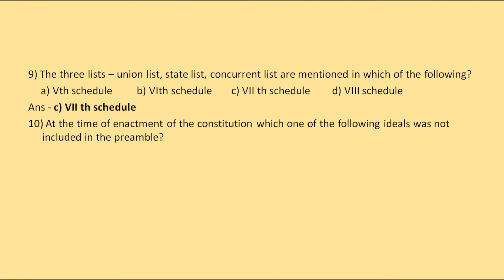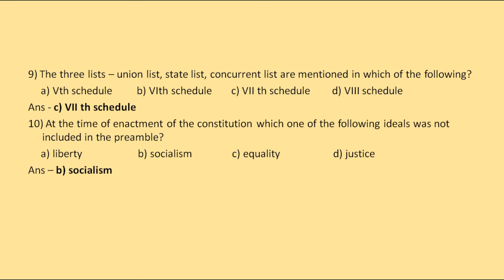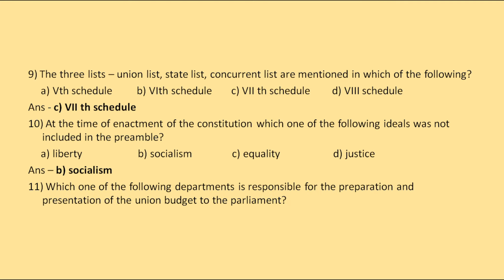At the time of enactment of the Constitution, which one of the following ideals was not included in the Preamble? The options are Liberty, Socialism, Equality, or Justice. The correct answer is Socialism — it was included by the 42nd Amendment Act of 1976.